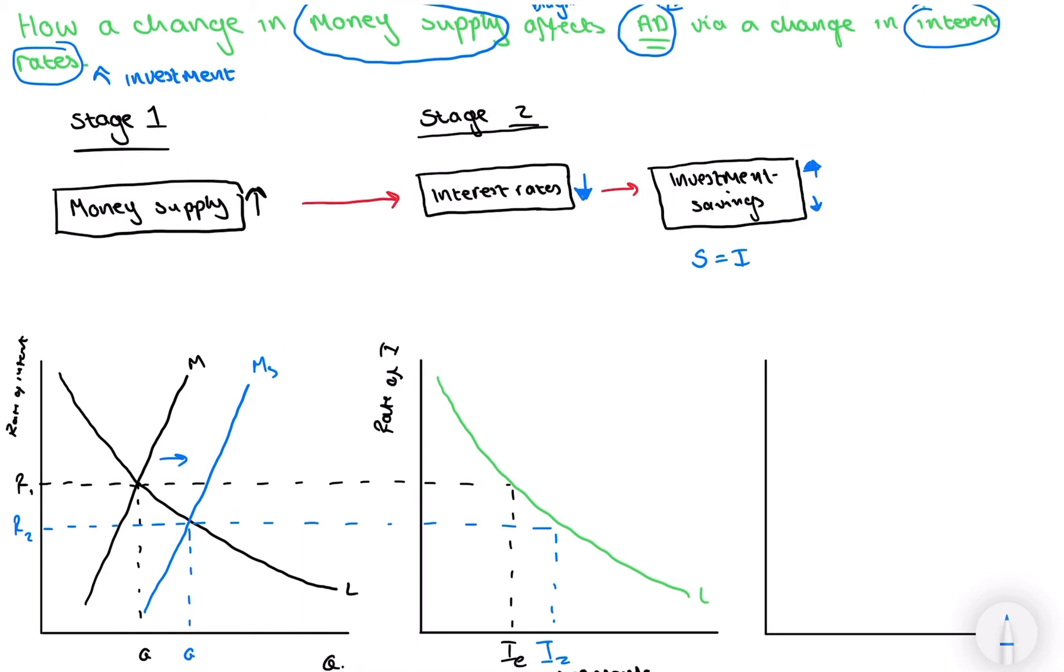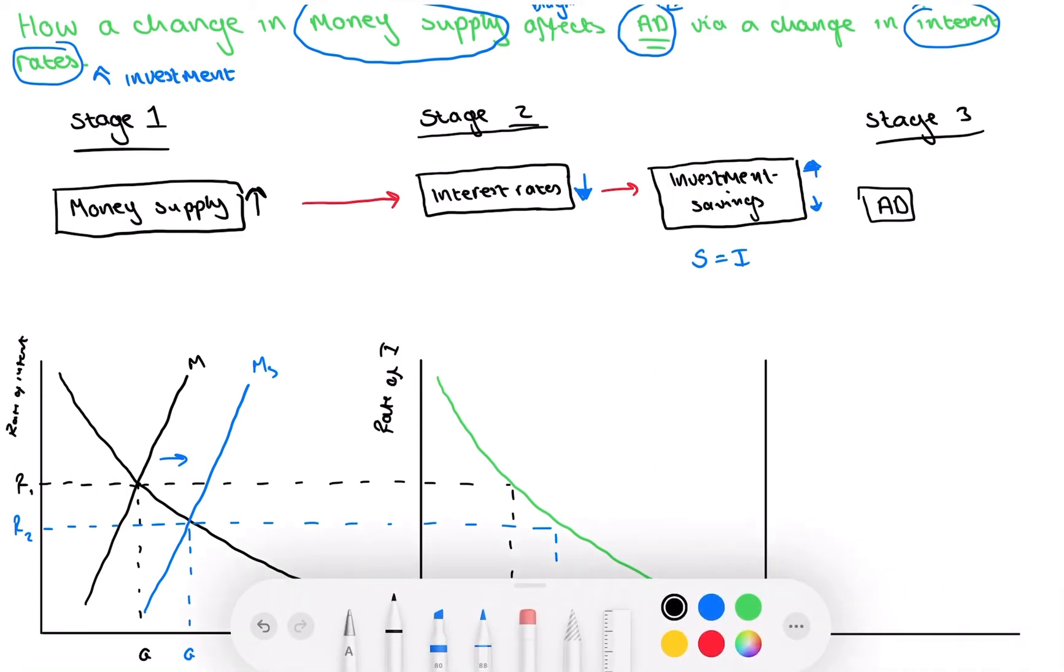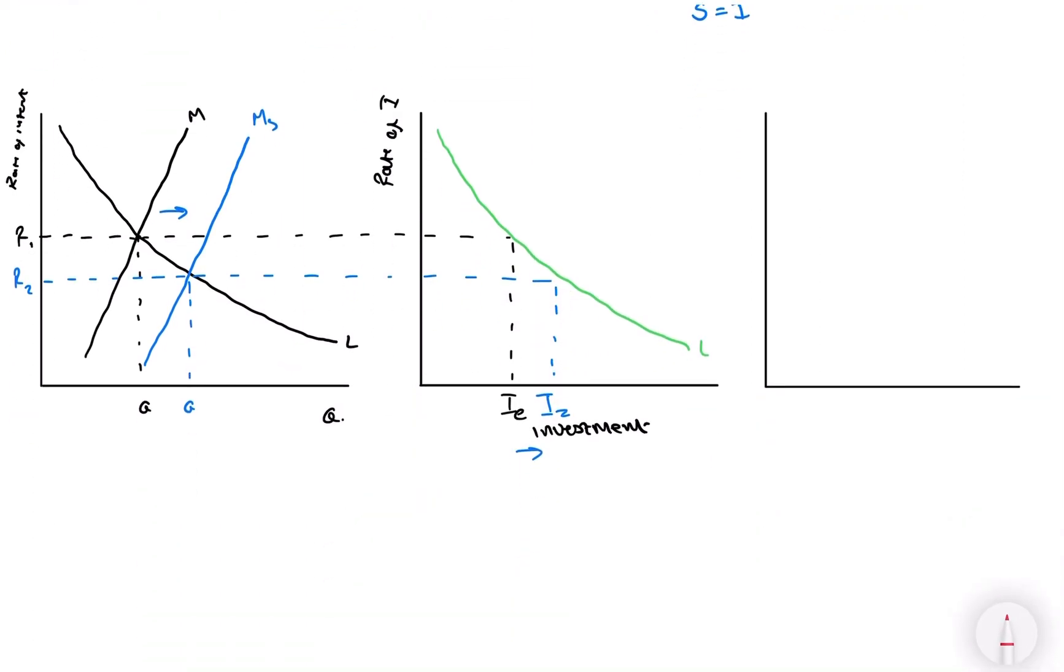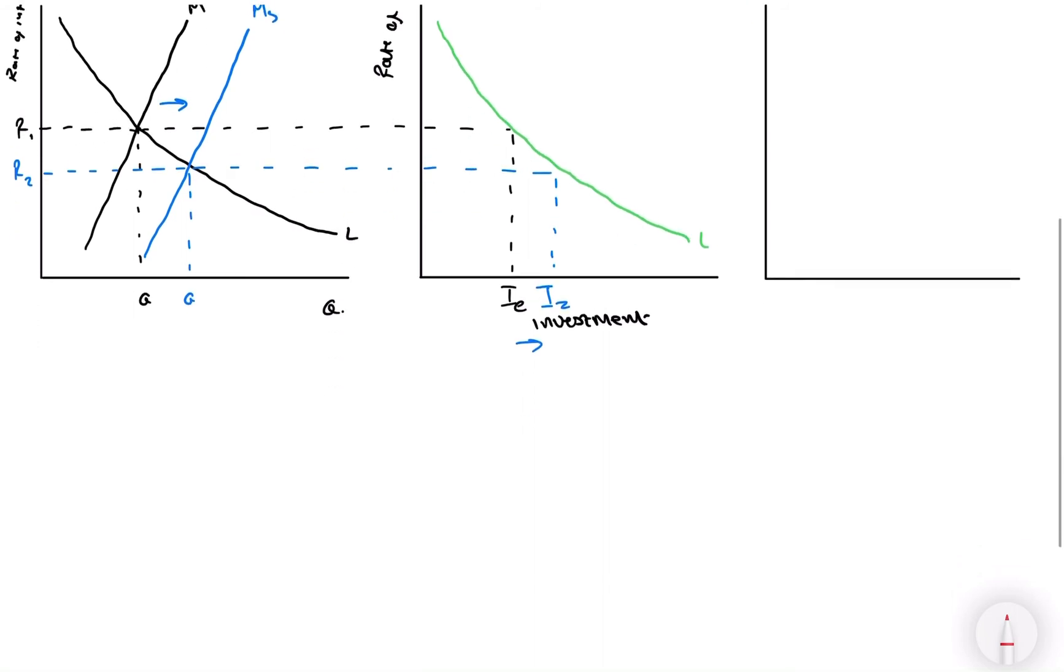And this is going to move us on to stage three now. This is looking very messy, and I do apologize, but stage three. So what is this going to do to our aggregate demand? Is it going to increase or is it going to decrease? So we can look at this by doing a WJ model, looking at the WJ model, the withdrawals and injections.